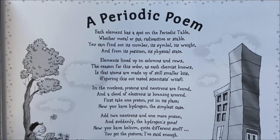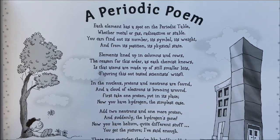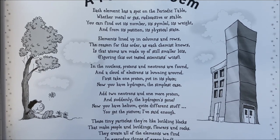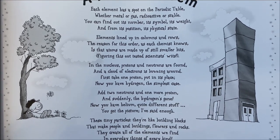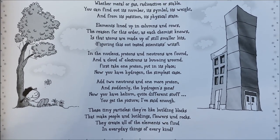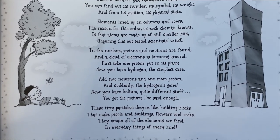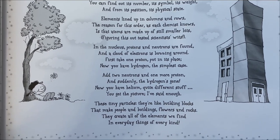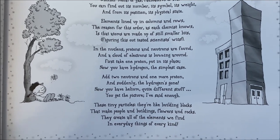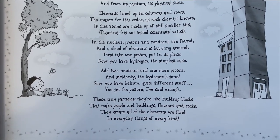A periodic poem: Each element has a spot on the periodic table, whether metal or gas, radioactive or stable. You can find out its number, its symbol, its weight, and from its position its physical state. Elements lined up in columns and rows — the reason for this order, as each chemist knows, is that atoms are made up of still smaller bits. In the nucleus, protons and neutrons are found, and a cloud of electrons is buzzing around. These tiny particles are like building blocks that make people and buildings, flowers and rocks — they create all of the elements we find in everyday things of every kind.